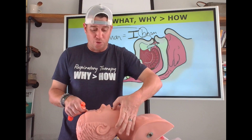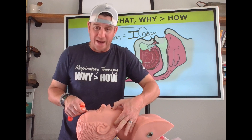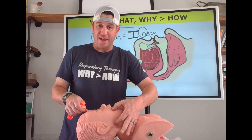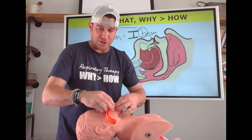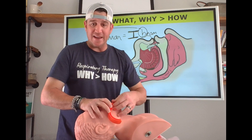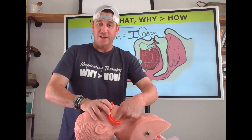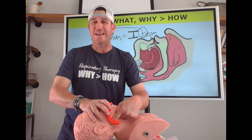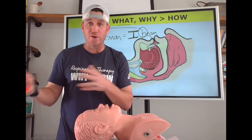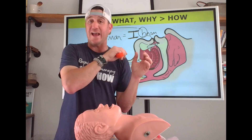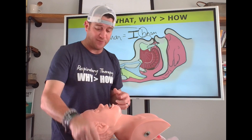We're going to size the OPA by assessing the distance from the corner of the mouth to the angle of the jawline. Here's the corner of the mouth, and going to the jawline on this mannequin. If I take this Berman OPA and place it at the corner of the mouth, you can see it comes down past the angle of the jaw — this one is too big. If you insert an OPA that is too large, it can further obstruct the airway and cause the tongue to be pushed back.